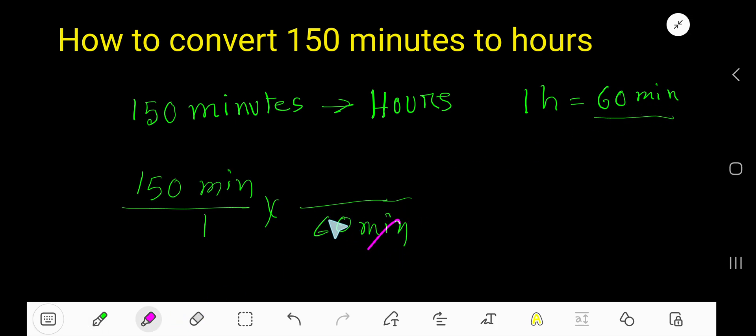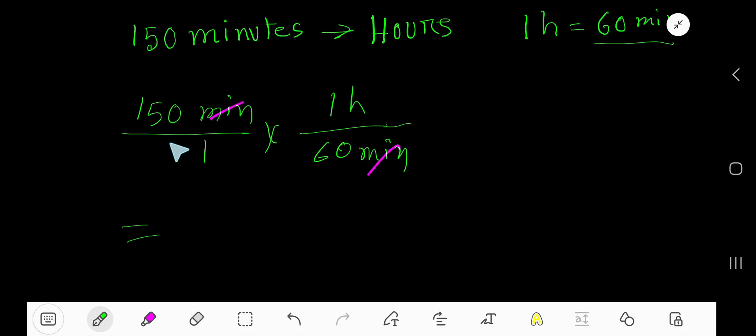We can cancel this minute with this minute, and hours will come automatically to the top. Now multiply the top numbers: 150 times 1, that is 150, over 60 hours.